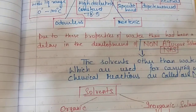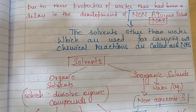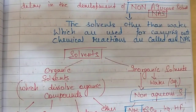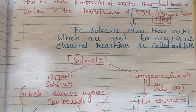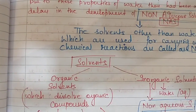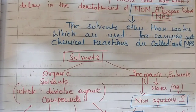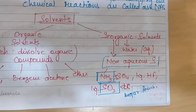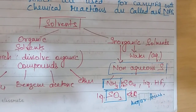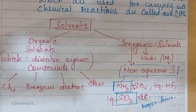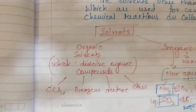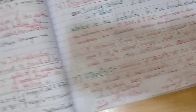Solvents are broadly categorized as organic solvents and inorganic solvents. Organic solvents dissolve organic compounds; inorganic solvents are used for inorganic compounds. Inorganic solvents are of two types: aqueous solvents, that is water, and non-aqueous solvents. Examples of non-aqueous solvents are ammonia, H2SO4, liquid HF, and liquid SO2. We will be majorly focusing on ammonia and liquid sulfur dioxide. Examples of organic solvents include CCl4, benzene, acetone, and ether.